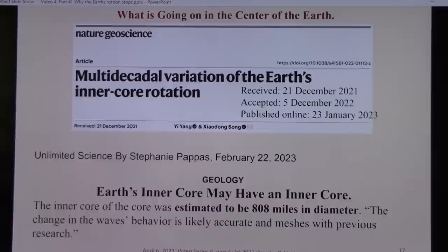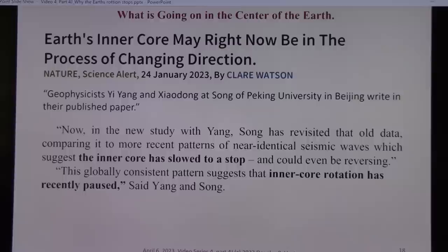This is the article that they were referring to. Quite a few people reported it. And I'm going to, I read it. I actually have the journal article. And they reported two Chinese geologists, geophysicists. They had reported the Earth's inner core may have an inner core. Which makes sense. And I'll explain why. The inner core of the core was estimated to be 808 miles in diameter. That's just an estimate. You'll see there's another estimate. The change in waves behavior is likely accurate and meshed with previous research.